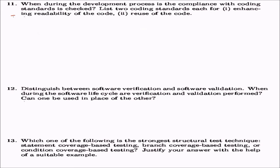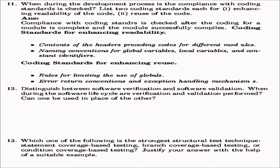When is compliance with coding standards checked, and what are two coding standards each for readability and reuse? Compliance is checked after the coding for a module is complete and successfully compiled. For readability: header content for modules, and naming conventions for global/local variables and constant identifiers. For reuse: rules limiting use of global variables, and error-return conventions including exception-handling mechanisms like try-catch.